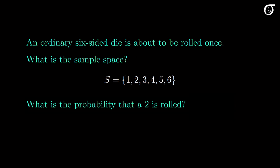What is the probability that a 2 is rolled when we roll the die once? Here it's reasonable to think that the six sample points are equally likely. As long as it's an ordinary die and we're rolling it fairly, that's a reasonable assumption to make. Since exactly one of the six equally likely sample points is a 2, the probability of rolling a 2 is 1 out of 6.